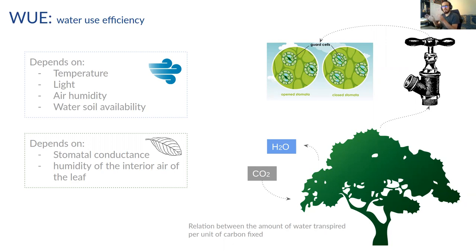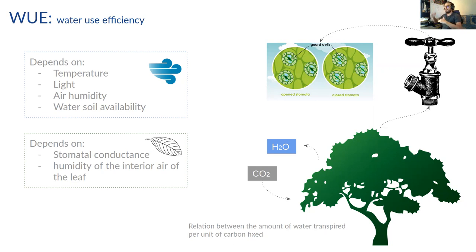Water use efficiency also depends on intrinsic variables like stomatal conductance and the humidity of the interior air of the leaf. If plants have a lot of water and the air has pretty low humidity, they are going to lose a lot of water per unit of carbon fixed. Plants physiologically try to regulate this process, but if we can measure evapotranspiration, we can check the physiological status of the forest.